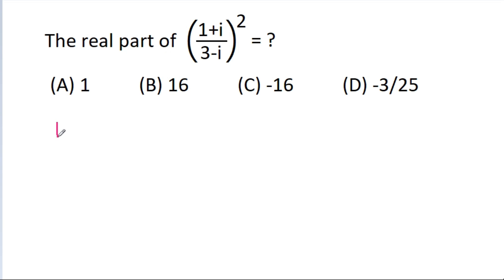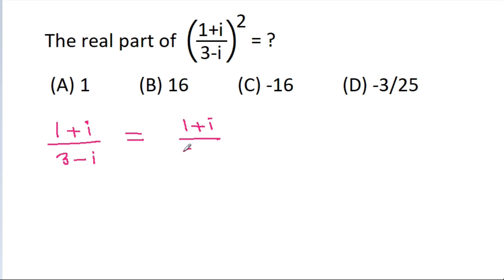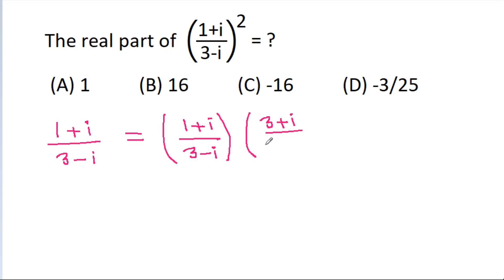So we have (1 + iota) / (3 - iota). If we multiply it with (3 + iota) / (3 + iota),